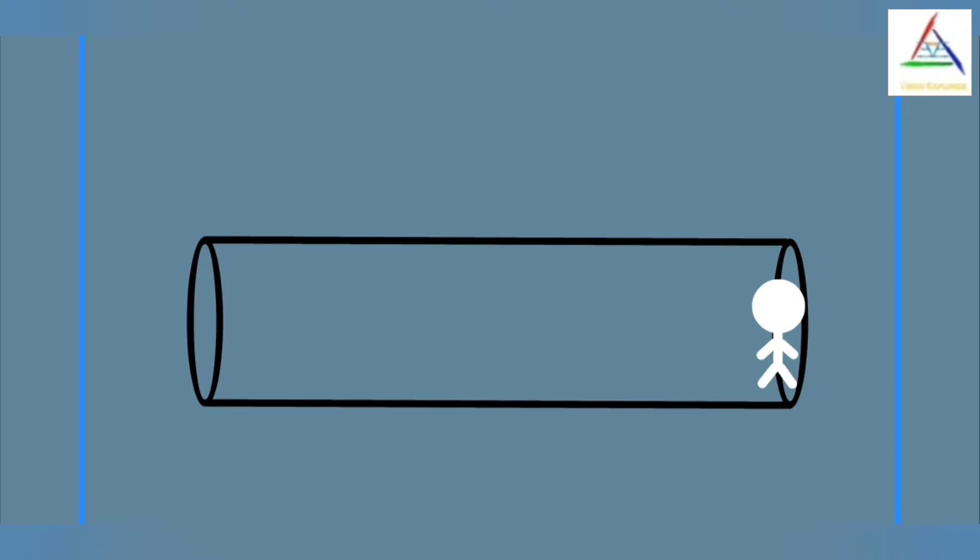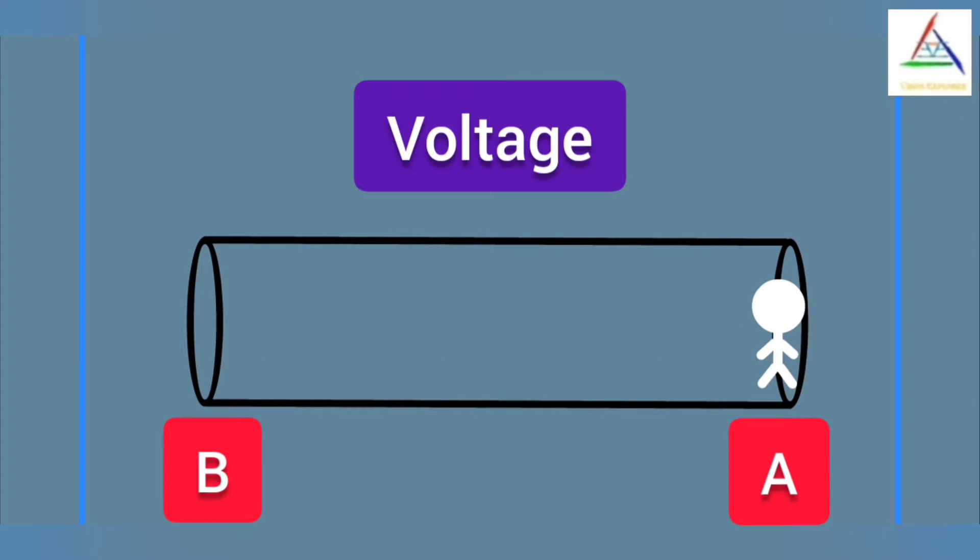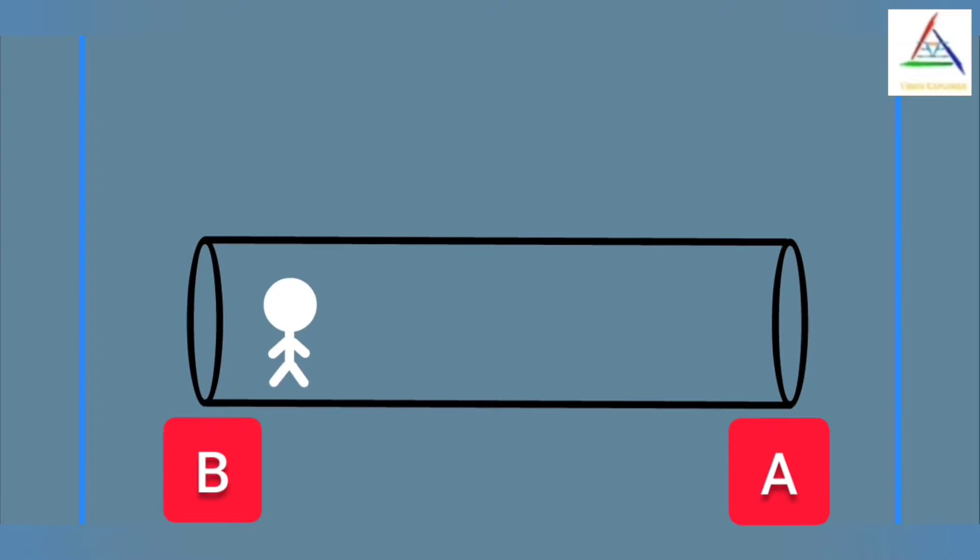Let's suppose a person is inside a tunnel and wants to move from point A to point B. Now think of voltage as work done or energy consumed by that person in moving from point A to point B, and think of current as the rate of moving of such persons. Now think of power as work done or energy consumed per unit time.